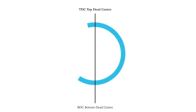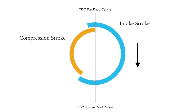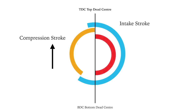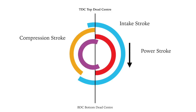So just to recap: we have top dead centre and bottom dead centre. The intake stroke begins just before top dead centre while the piston's moving down. The compression stroke begins after bottom dead centre. Then the power stroke with the piston moving down. And finally the exhaust stroke with the piston moving up. Short lines will show where and how many degrees before top dead centre or bottom dead centre each action is taking place.